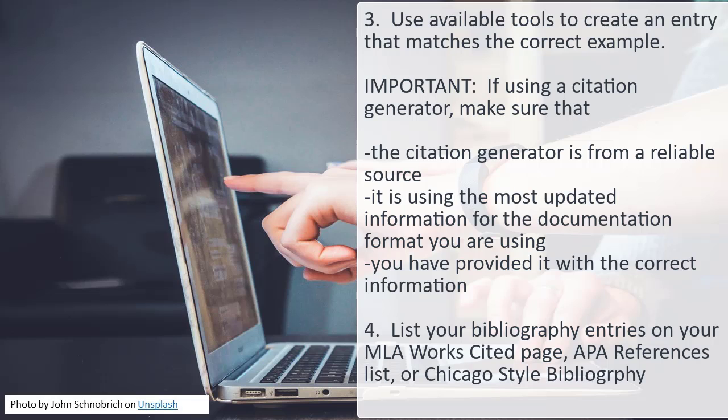You have provided the citation generator with the correct information, including the kind of source you are using and all the correct publication information. Once you use a citation generator to create an entry, remember to check it against the correct example that you found. If they don't match, you need to make corrections or use another method. Of course, if you choose, you may just type a correct bibliography entry based on your source information, made to match the correct example.